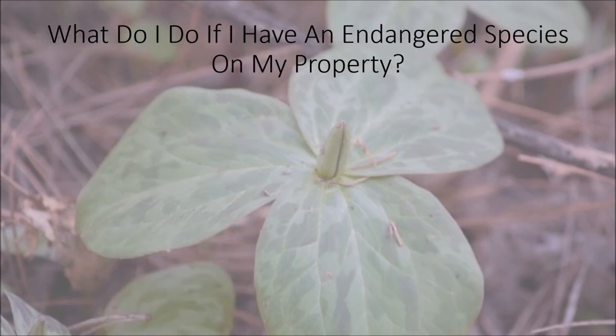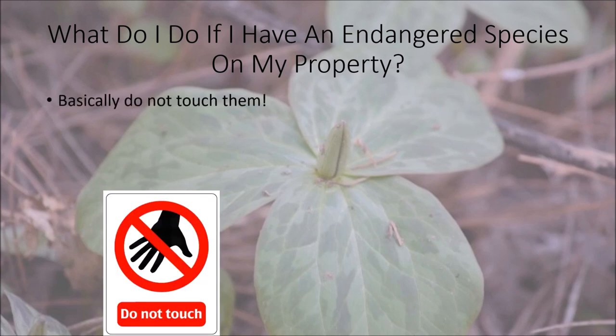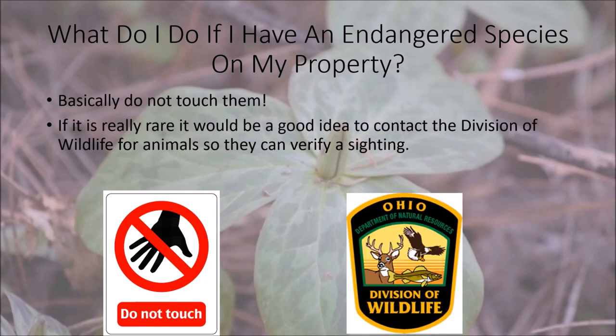Now that we've learned about the history of the Endangered Species Act and some endangered species in Marion County, some of you might be wondering — if I have an endangered species on my property, what do I do? The big thing: don't touch them. They're protected — just let nature take its course. But definitely if you can, get a picture or video and send it to the Ohio Division of Wildlife. They may bring out wildlife researchers and a wildlife officer to examine the situation, because the Division of Wildlife really wants to know what's going on with endangered species in Marion County.